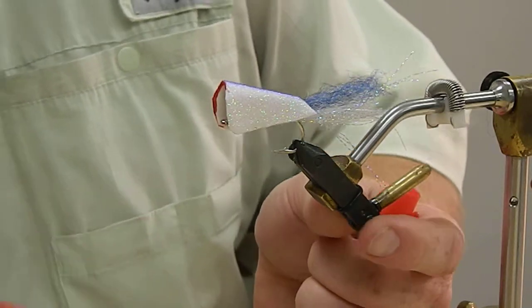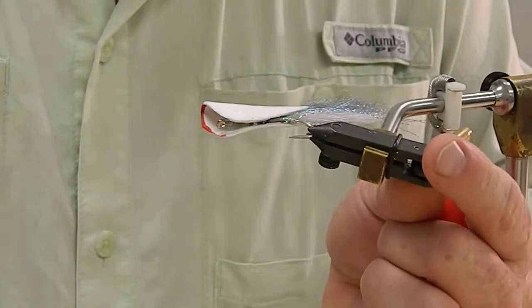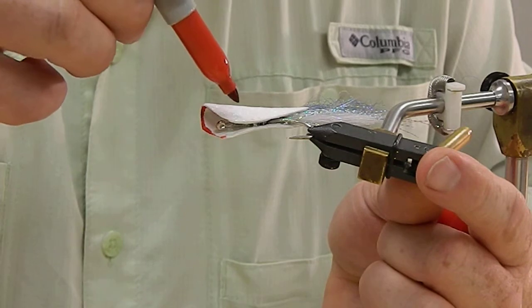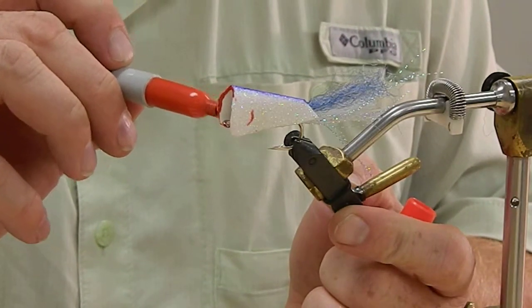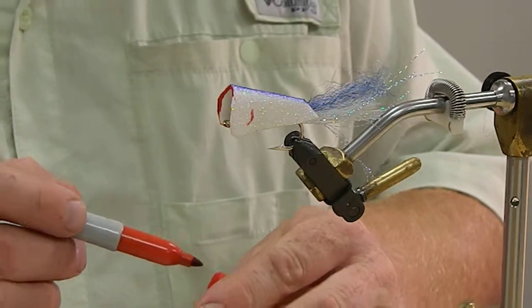Like so, and if we want to put a little bit of gill plate on here, you can do so like that, on each side. That kind of marks where you're going to have your eyes at.